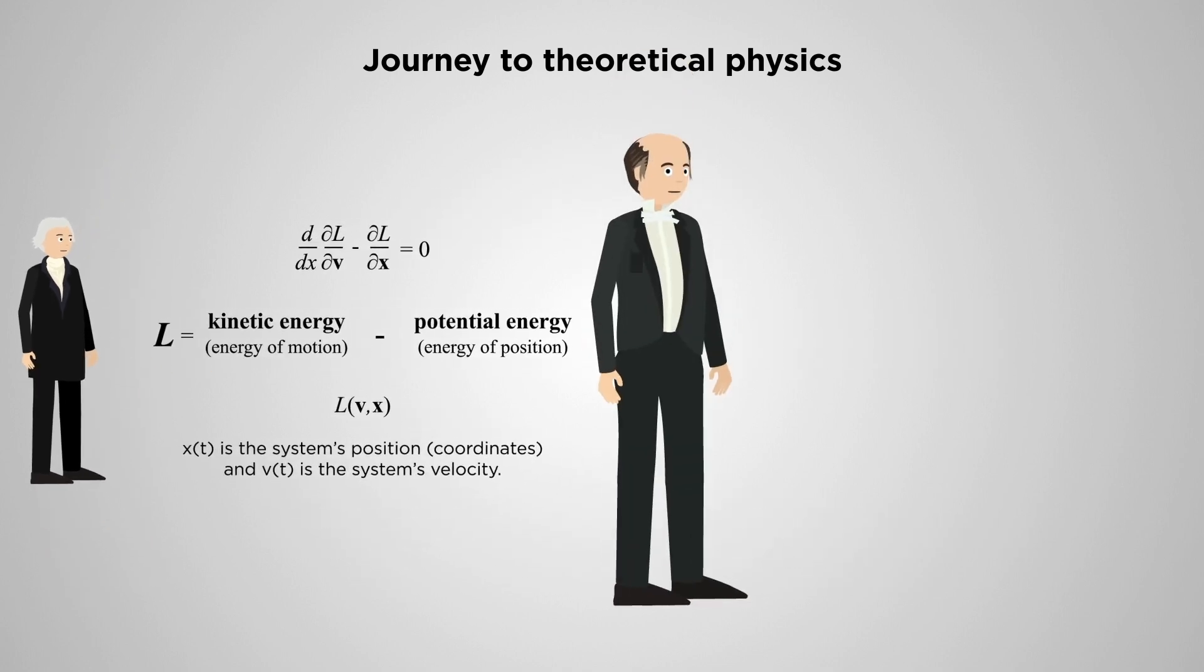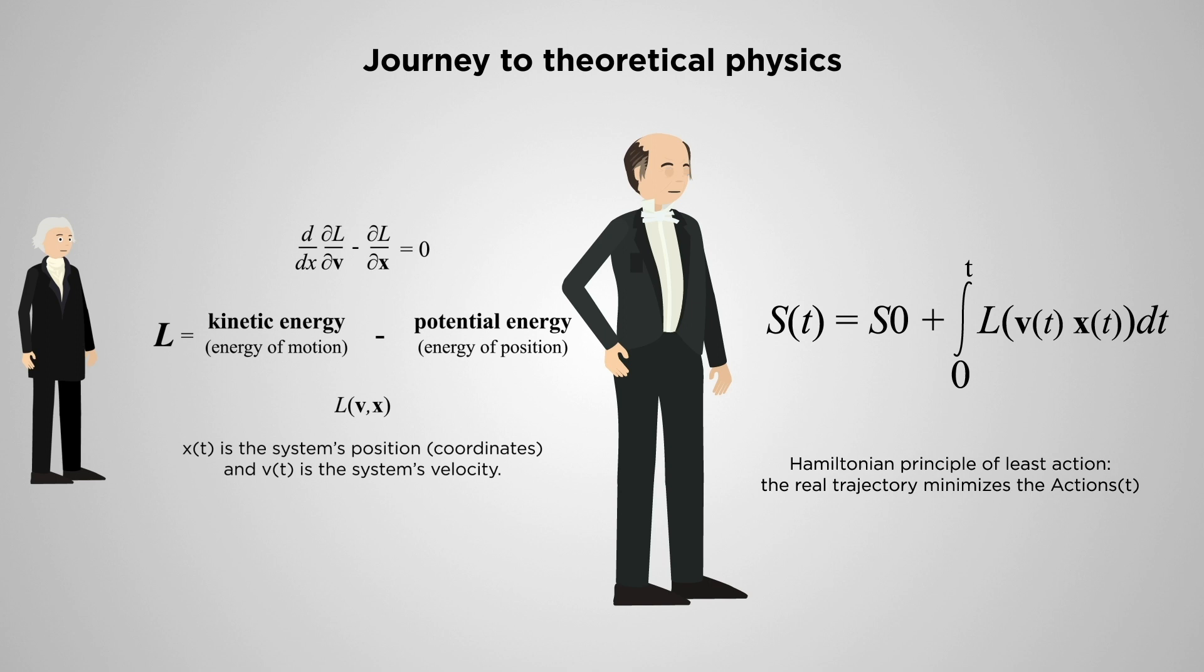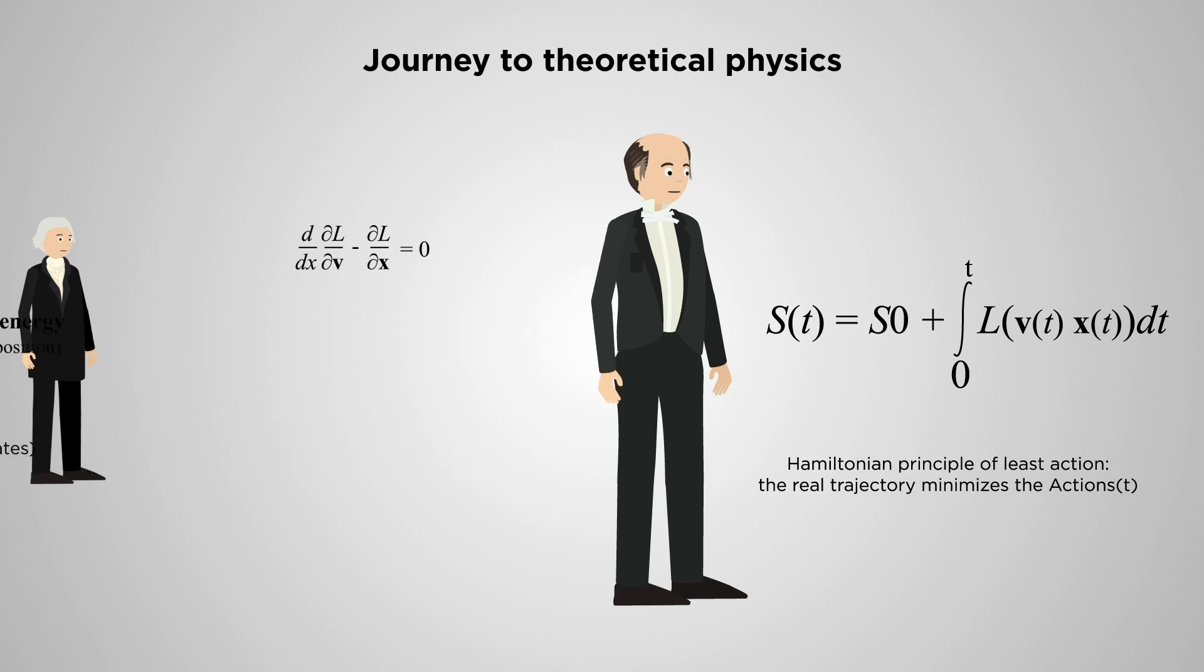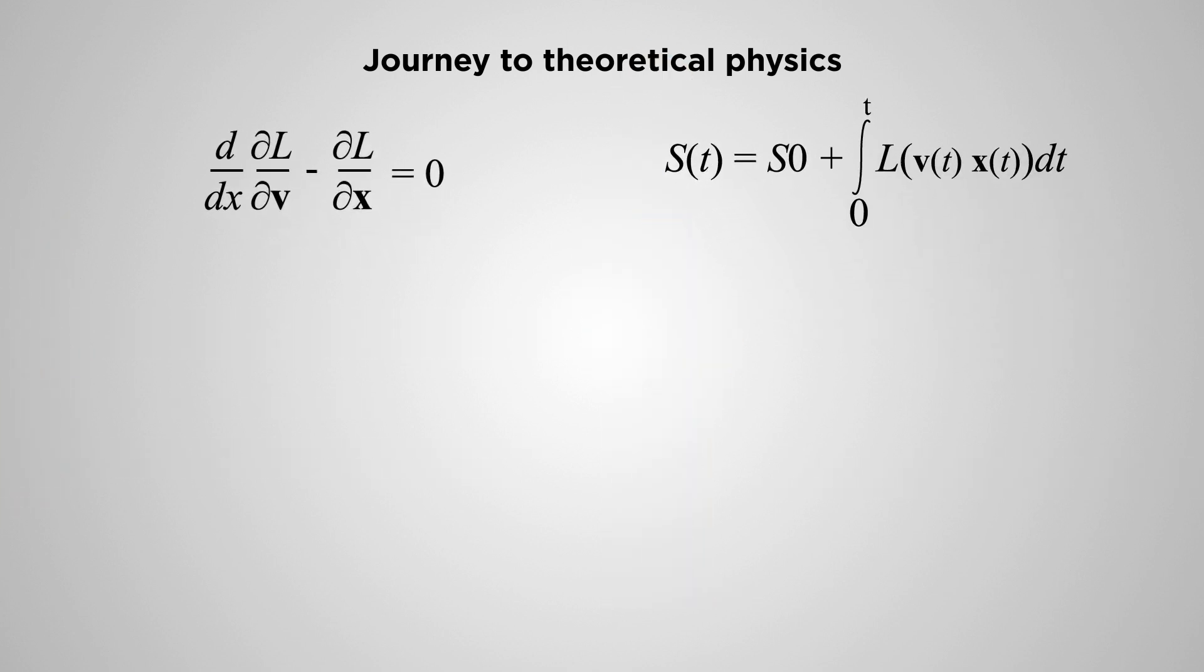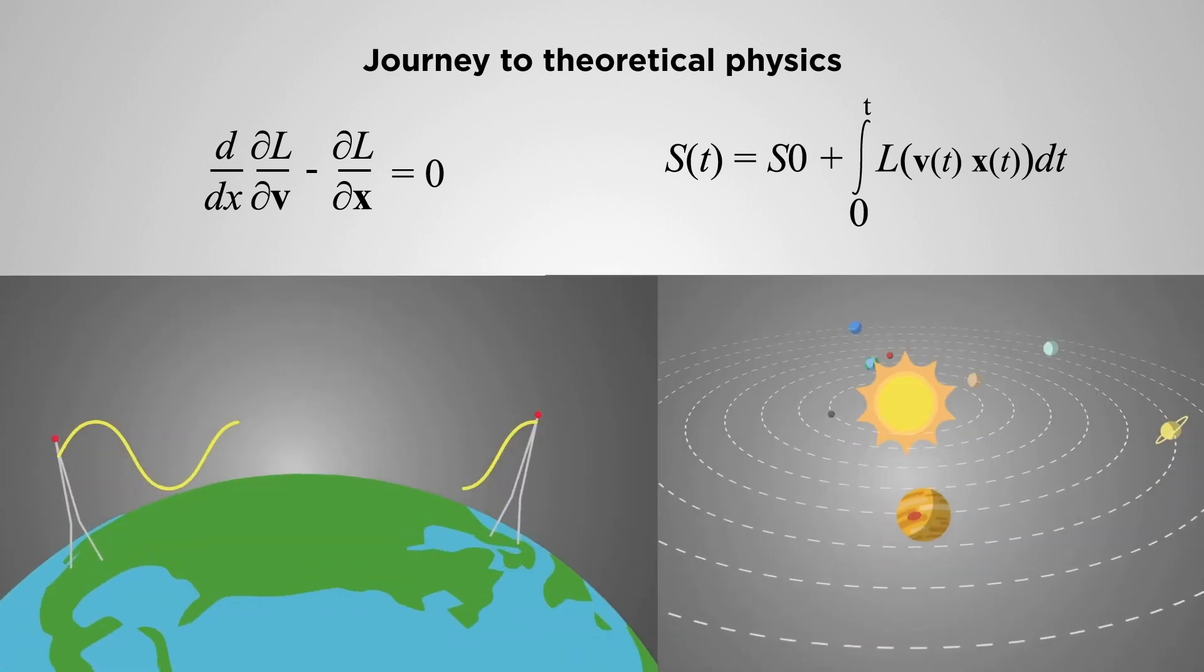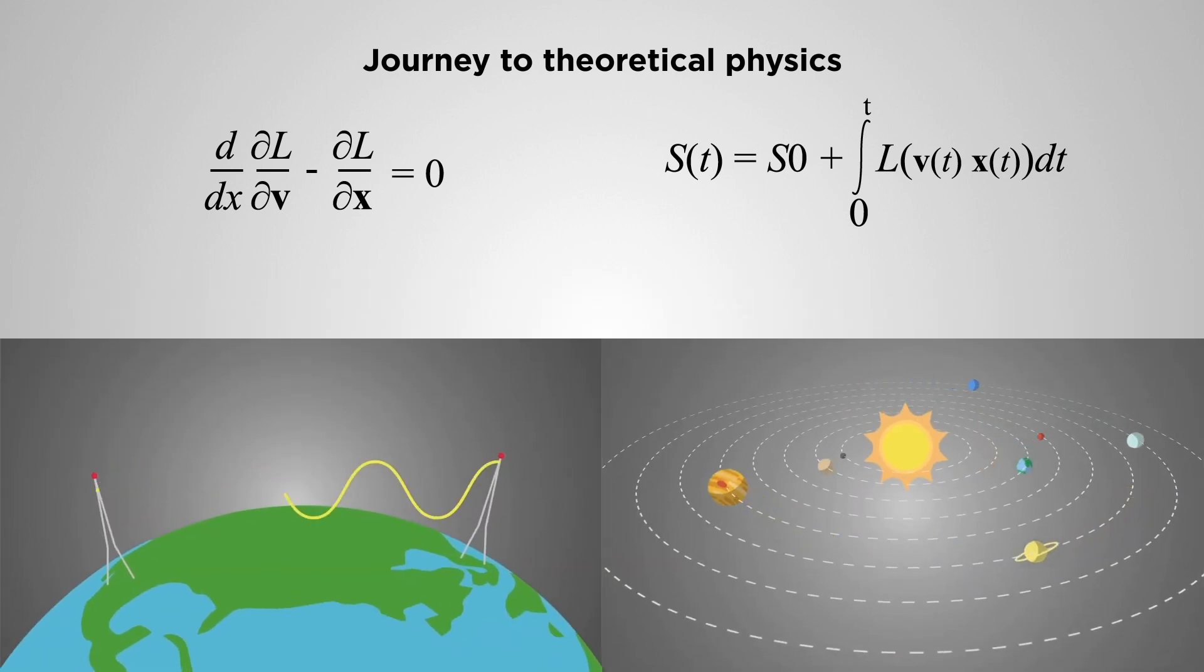Half a century later, Sir William Hamilton completed the development of the basis of modern theoretical physics with the introduction of the action and the Hamiltonian principle of least action. Unfortunately, both Hamilton's principle of least action and the original Lagrangian dynamics are limited. They are time-reversible, so they cannot be applied to living systems.